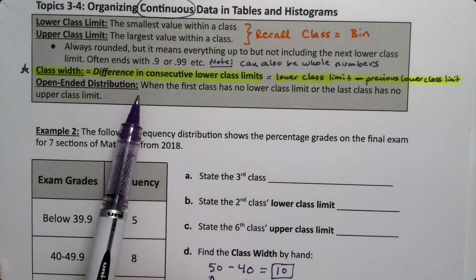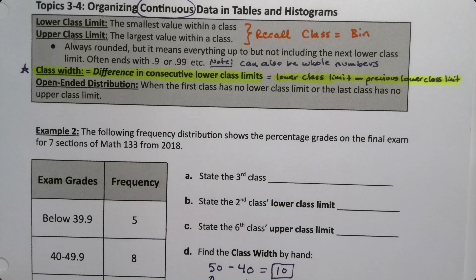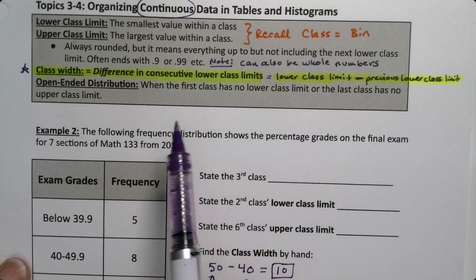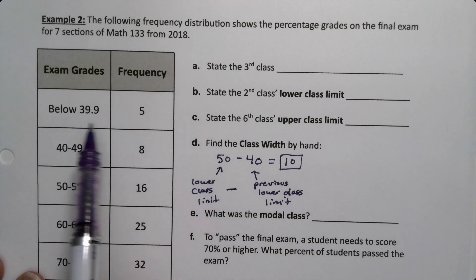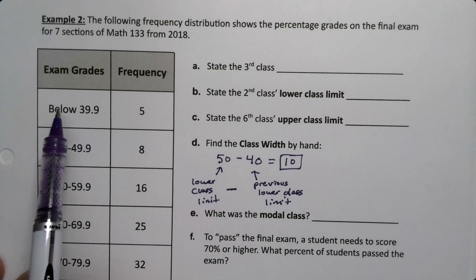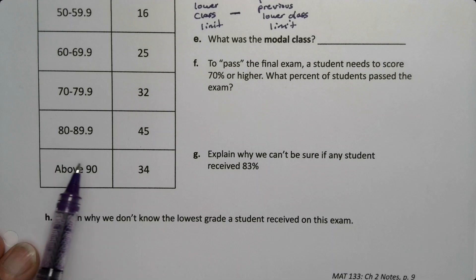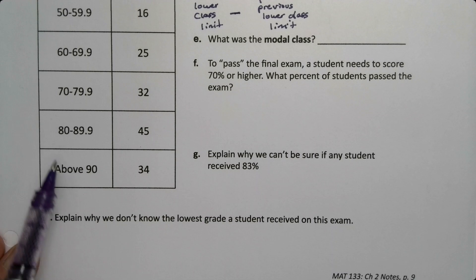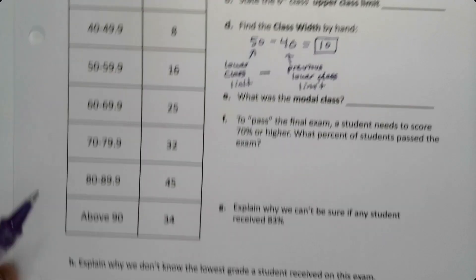An open-ended distribution is when either the first class or the last class or both have no lower class limit or upper class limit, respectively. For example, this is open-ended. We don't know the lowest value because we just know it's below 39.9. Similarly up here, we don't know how high this goes. This is open-ended on both sides.